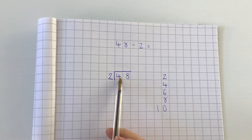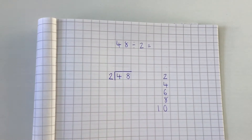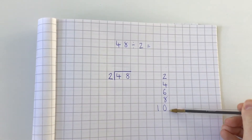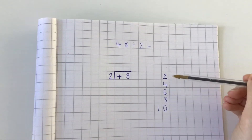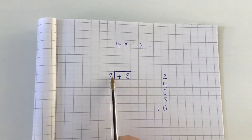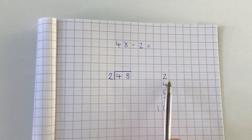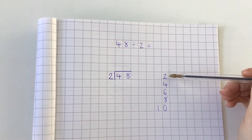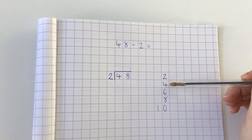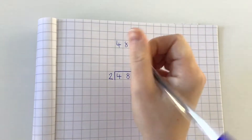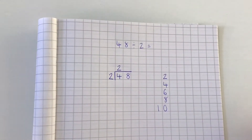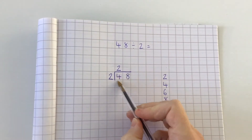We have our first division: we need to look at the 4, so we need to do 4 divided by 2. We need to think: how many times does 2 go into 4? Using our times tables list, we count — it goes in once, twice. So 2 goes into 4 two times, and we can check that: 2 times 2 equals 4.